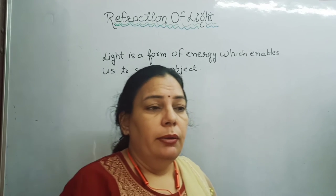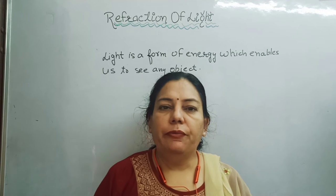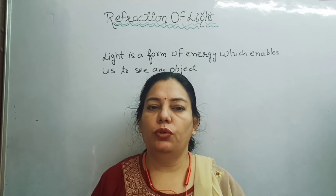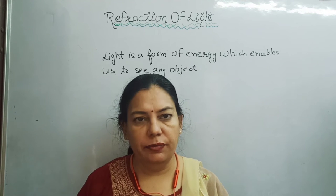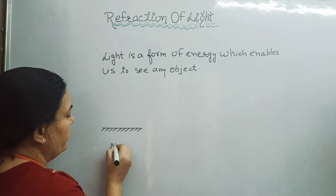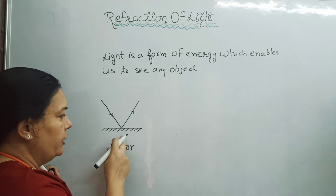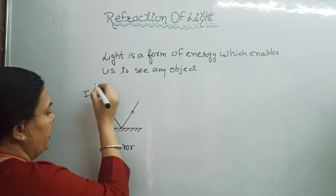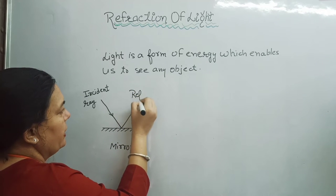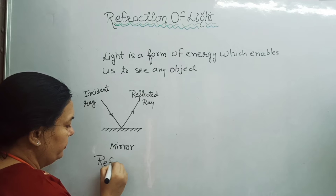What is refraction of light? Before starting, let us discuss some basics. When light falls over different surfaces, it shows different behavior. For example, when it falls over a highly polished surface like a mirror, it bounces back — that is reflection of light. The ray falling on the mirror is called the incident ray, and the ray that bounces back is the reflected ray.